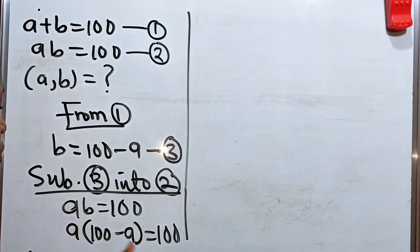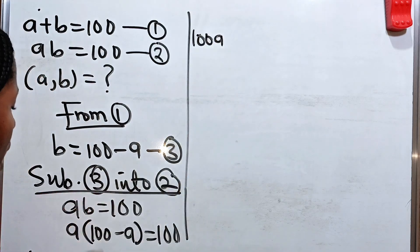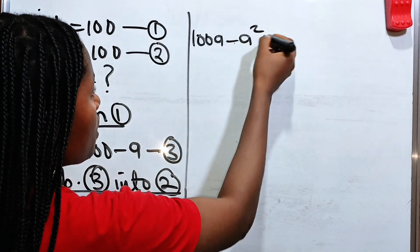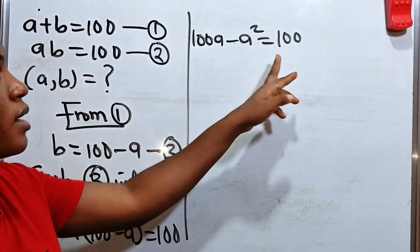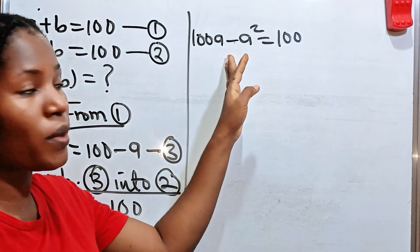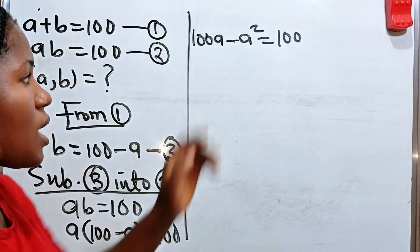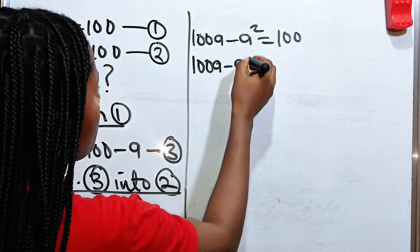Now let us open the brackets. A times 100 will give us 100A. So we have 100A. And A times minus A will give us minus A squared. Minus A squared is equal to 100. Now let us bring this to this side, because when you look at this, you notice that we just formed a quadratic equation. So we are going to bring this to this side. And if we do that, we have 100A minus A squared.